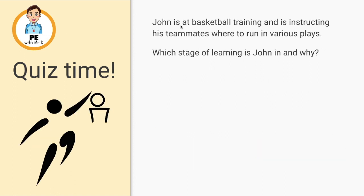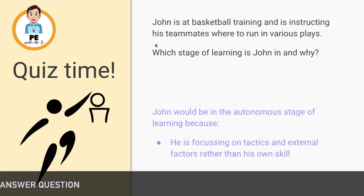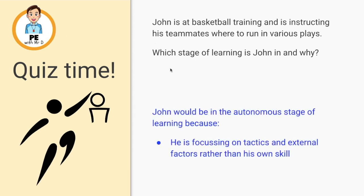And finally we have John. John is at basketball training, instructing his teammates where to run in various plays. Which stage of learning is John in and why? John would be in the autonomous stage of learning, because he's focusing on tactics and external factors rather than on his own skill, indicating that he has mastered the skill and is able to shift his focus during training.